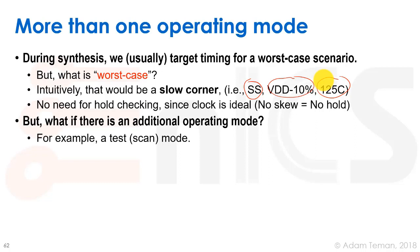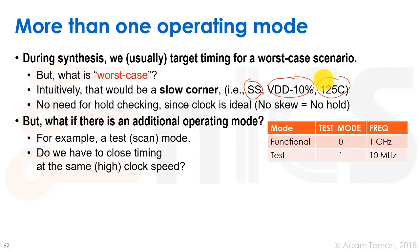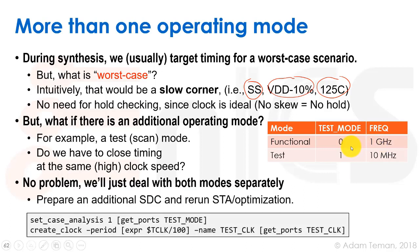But what if there is an additional operating mode — for example, a test mode or a scan mode? Do we have to close timing at the same high clock speed? Here we have a table in our spec that says we have two modes, functional and test, with a pin or register that gets case analysis set to zero or one for test mode. Each has a different frequency — do we have to close timing in test mode at 1 GHz, or can we close it at the 10 MHz frequency the spec requires?